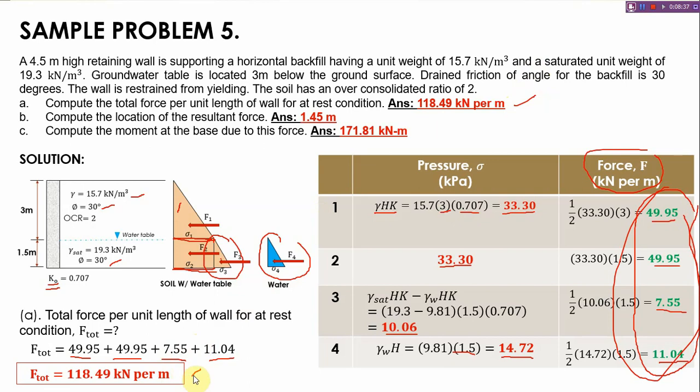We can get 118.49 kilonewton per meter, so this is our answer for letter A. You can check if this answer is the same if you use full values in your calculation. There might be a slight difference but that's okay.